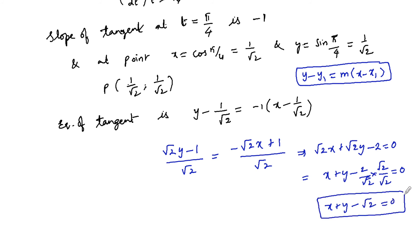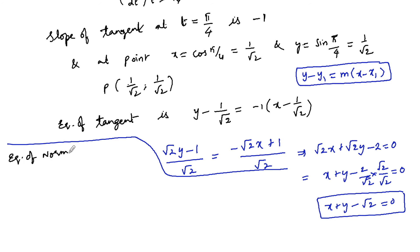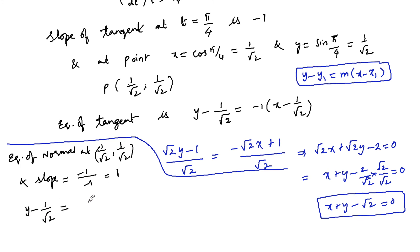So x plus y minus root 2 equals 0 is the equation of the tangent. For the equation of the normal at the point (1/√2, 1/√2), the slope is minus 1 by minus 1, that is positive 1. So we write y minus 1 by root 2 is equal to 1 times of x minus 1 by root 2, giving x minus y equals 0.